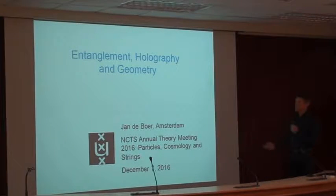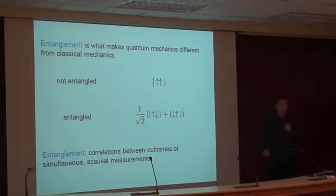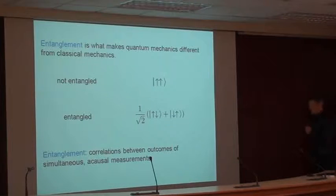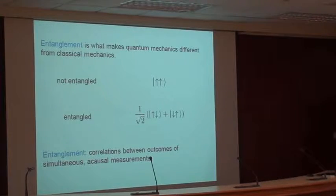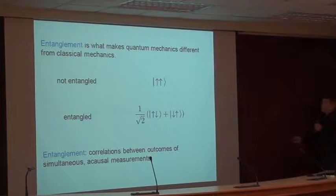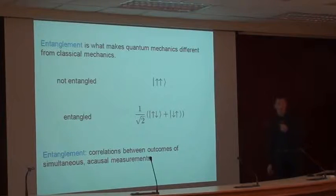I will start this talk by saying a few things about the quantum mechanical notion of entanglement, because that's going to play an important role. Entanglement, although it's a very well-known feature of quantum mechanics, is starting to play a more and more important role in our present understanding of quantum gravity and the emergence of space and time. Entanglement is exactly that thing that makes quantum mechanics different from classical mechanics.